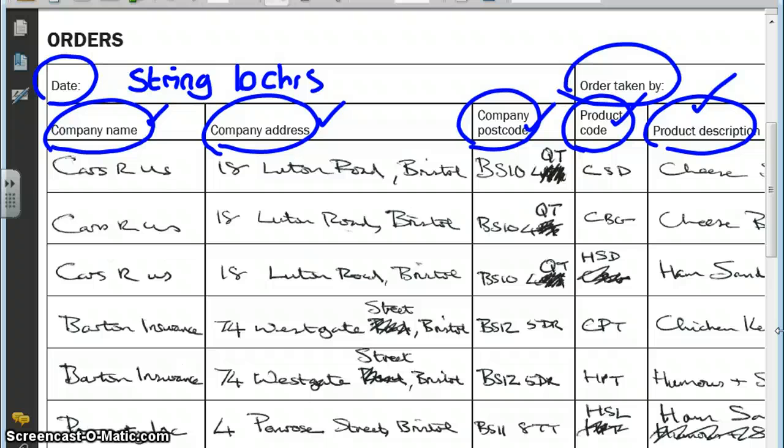So the company name, we could estimate that that might be up to 40 characters. The company address could take up to 100 characters. Company postcode, up to 8 characters. Product codes are 3 characters. Product description could be up to 20. And so on. We start to look at that this could be repeated. So this here could be repeated, in this case, 3 times.